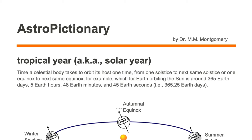A tropical year is also known as a solar year. It is the time a celestial body takes to orbit its host one time, from one solstice to the next same solstice, or one equinox to the next same equinox, for example. For Earth orbiting the Sun, that is around 365 Earth days, 5 Earth hours, 48 Earth minutes, and 45 Earth seconds.